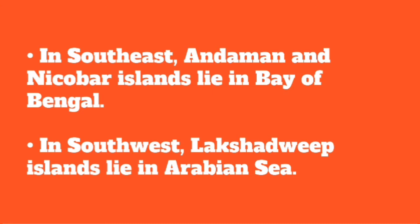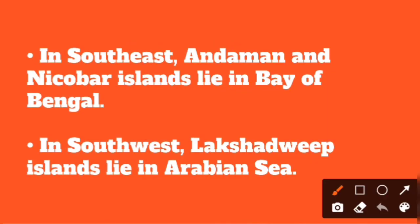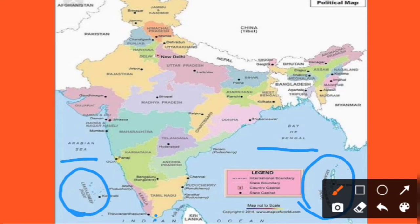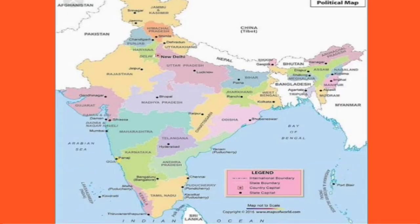In the south-east, the Andaman and Nicobar Islands lie in the Bay of Bengal. And in the south-west, the Lakshadweep Islands lie in the Arabian Sea. The southernmost tip of India is Kanyakumari, where three water bodies meet: the Arabian Sea, the Bay of Bengal, and the Indian Ocean.